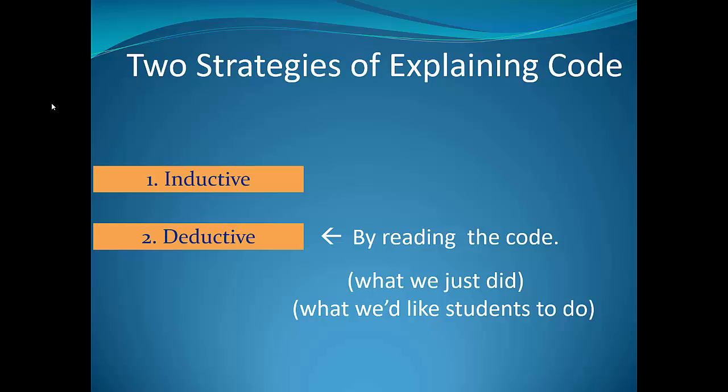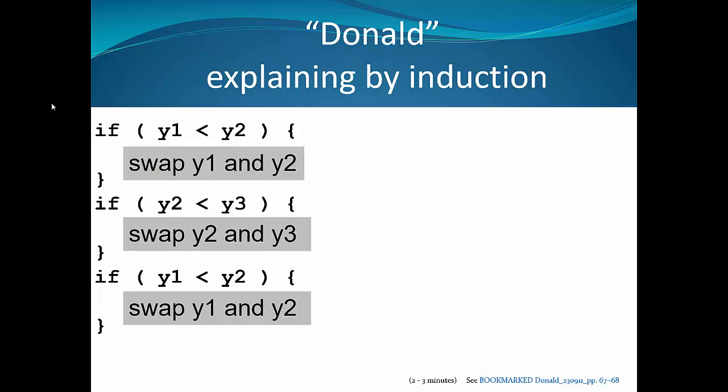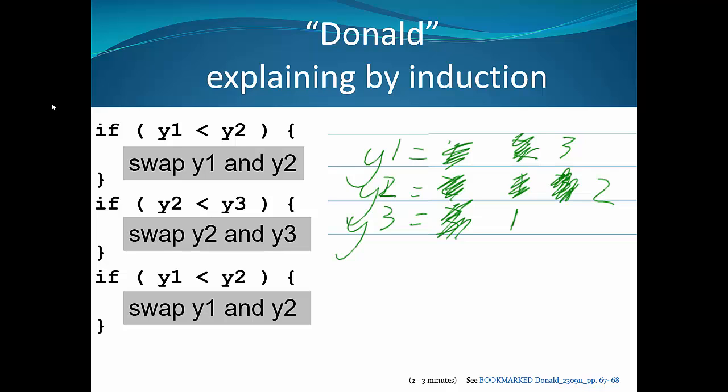But there's quite a few students who don't do that. They do it by what I call the inductive approach. What they do is plug some initial values into the variables and then manually execute the code, trace it. Based upon the input-output behavior of the code, they offer up an explanation. Here's an example of one subject we studied, Donald. He chose the values one, two, and three as initial values. He carried out a perfectly correct trace of the code so that when the code finished, the values were three, two, one. He went from initial values of one, two, three to three, two, one. On the basis of that trace, Donald concluded that the purpose of the code was to reverse the values in y1, y2, y3.